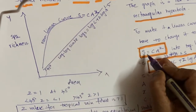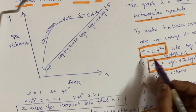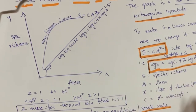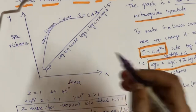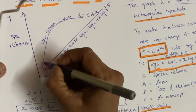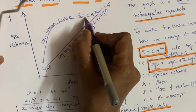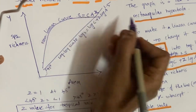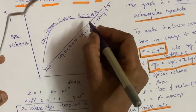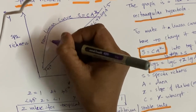The equation for this nonlinear curve is S = CA^z, where S is species richness, C is the y-intercept, A is area, and z is the slope of the line — also known as the regression coefficient. As the area increases, the curve rises showing increasing species richness up to a certain limit, after which it becomes stable and attains an equilibrium state — further increasing the area doesn't change species richness.